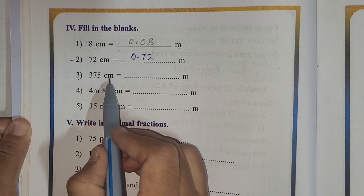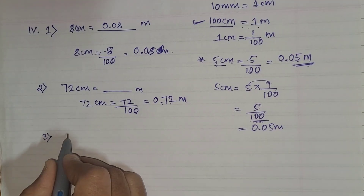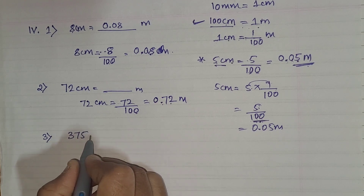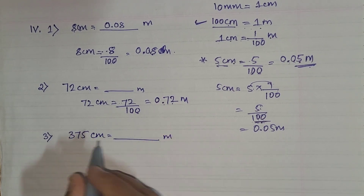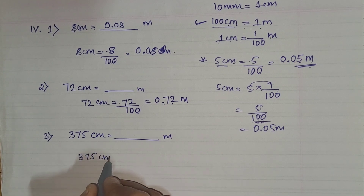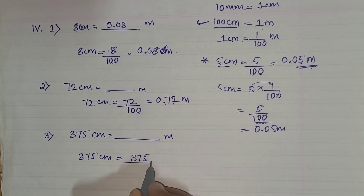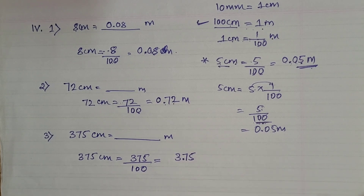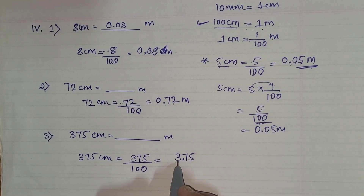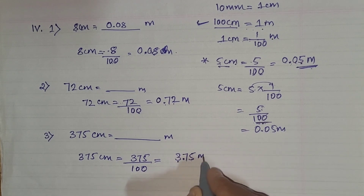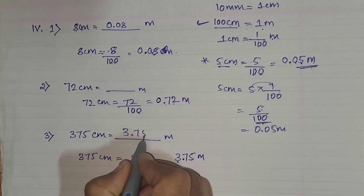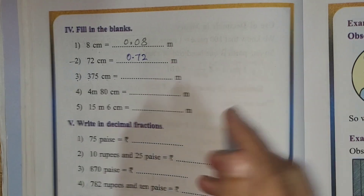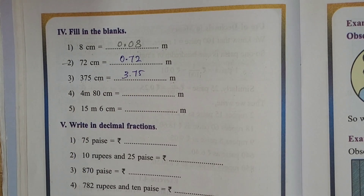Third one: 375 centimeters equals dash meters. So 375 divided by 100 — write 375 as-is, there are 2 zeros, so put the decimal after 2 digits. We already have a number there, so 3.75 meters is your answer.